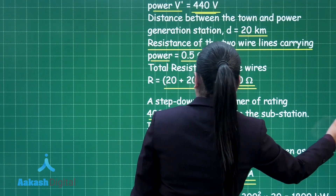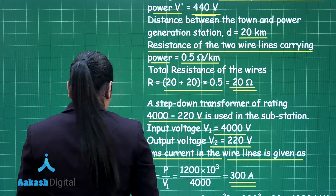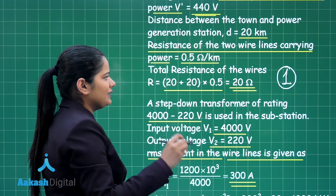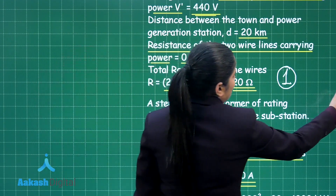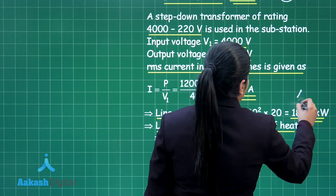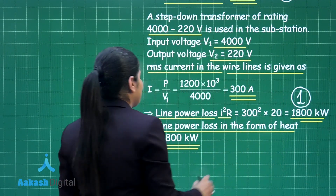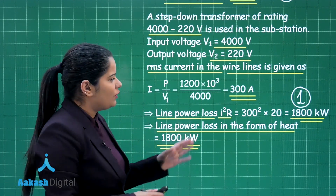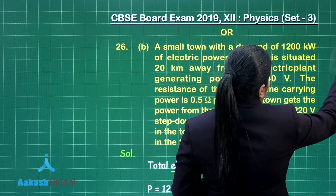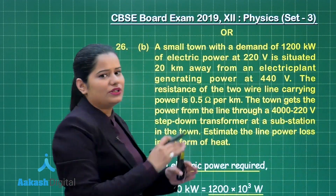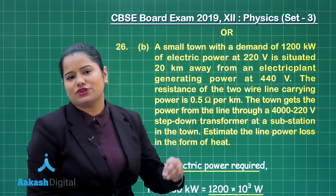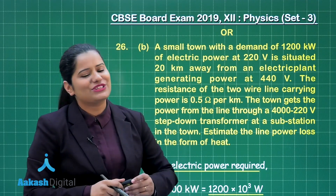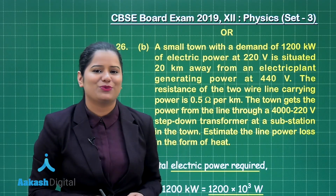You get one mark for successfully calculating the total resistance of the wire, and another mark for calculating the final power loss in the line as heat. This is how you score 5 out of 5 for this choice of question number 26. Now let us move on to the last question of Set 3, which is question number 27.